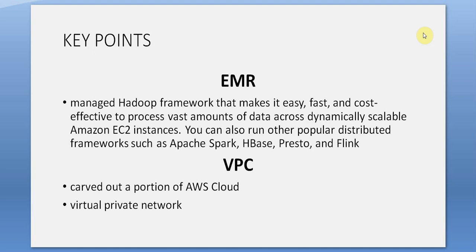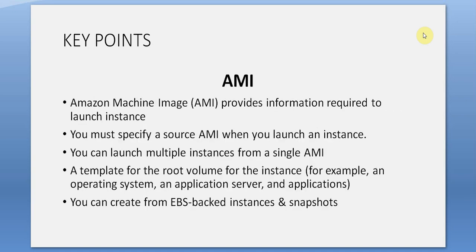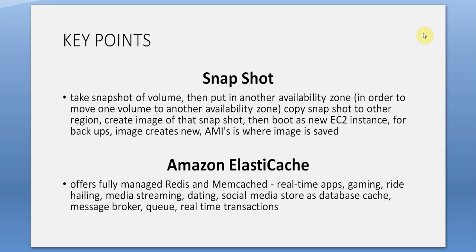VPC: a carved-out portion of the AWS cloud — a virtual private network. AMI (Amazon Machine Image): provides the information required to launch an instance. You must specify a source AMI when you launch an instance. You can launch multiple instances from a single AMI. It is a template for the root volume of the instance — for example, the operating system, application server, and applications. You can create an AMI from EBS-backed instances and snapshots.